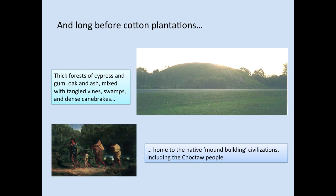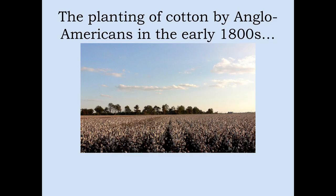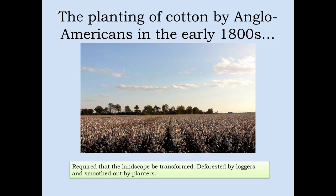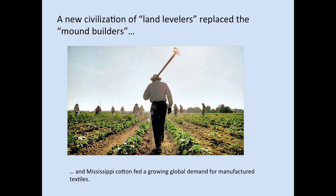Prior to the arrival of whites, it was home to the native mound-building civilizations, including the Choctaw peoples. The Choctaw were among those forcibly removed by the U.S. federal government during the Indian removal period of the 1830s. And so these two geographies connect indirectly — the Mississippi Delta and the Indian Territory, later the Dust Bowl region of Oklahoma. The planting of cotton by Anglo-Americans in the early 1800s would transform the landscape of the Delta, requiring that the landscape be flattened out and the trees be cut.